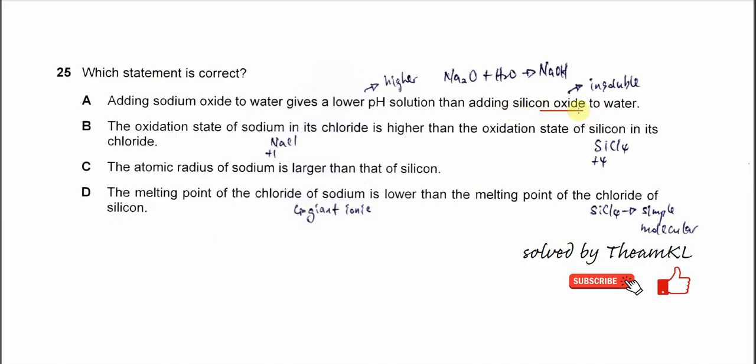First, SiO2 is insoluble in water and sodium oxide is a base. It will dissolve in water to form an alkaline solution which is going to have a high pH. Therefore, the first statement is wrong.